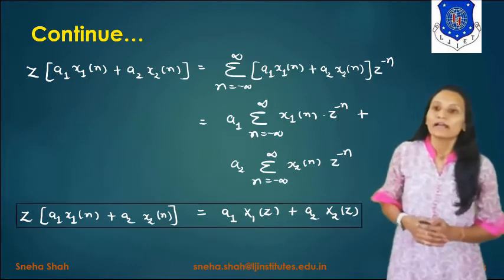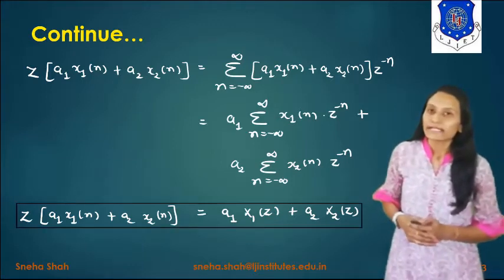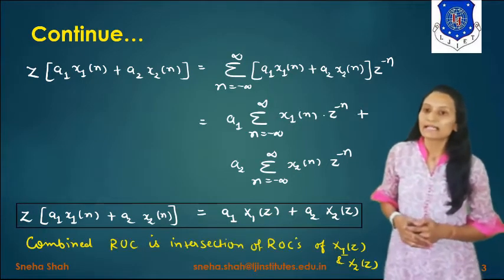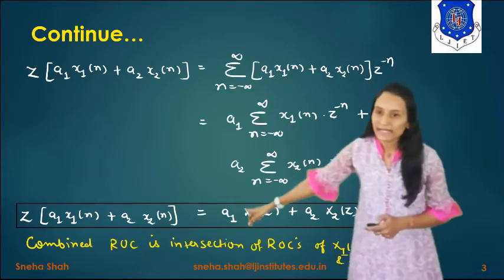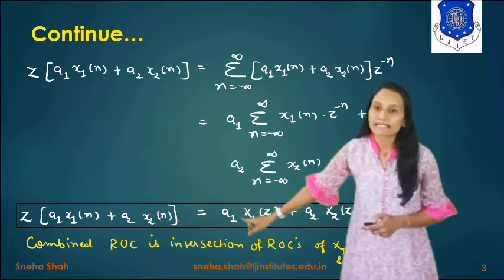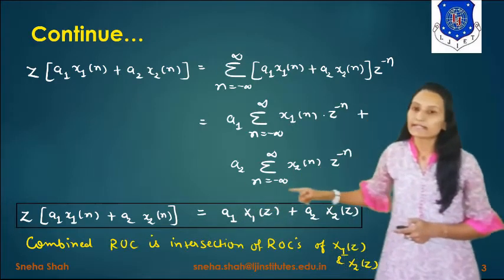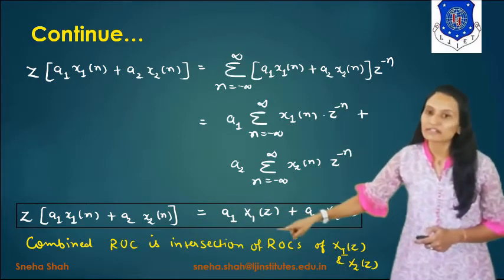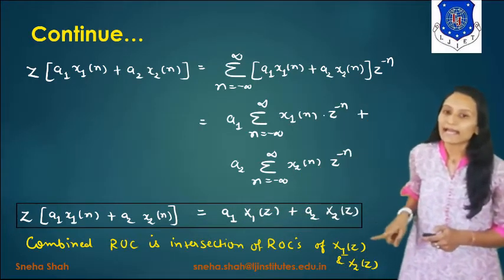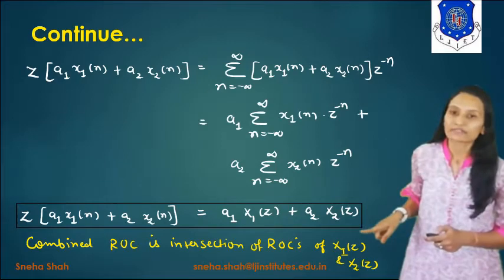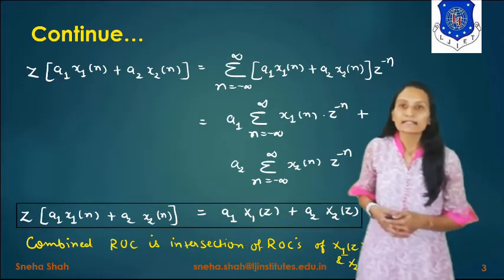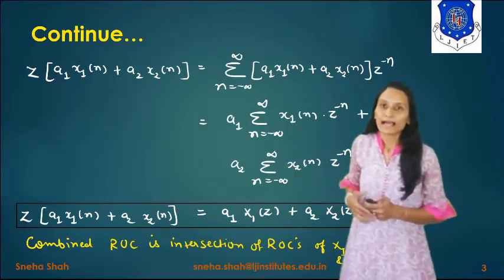Now finding the ROC for the linearity property: the combined ROC is the intersection of the ROC of X1(z) and the ROC of X2(z). This intersection is considered the final ROC.